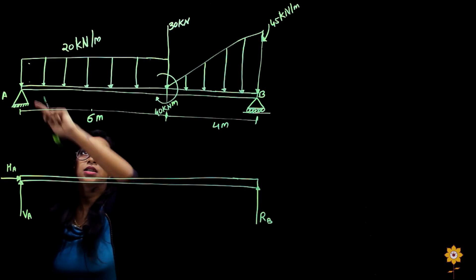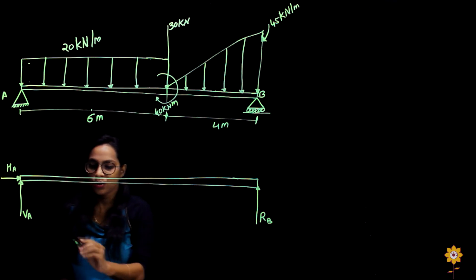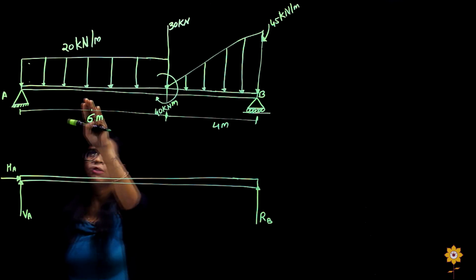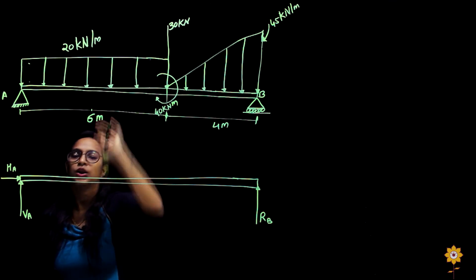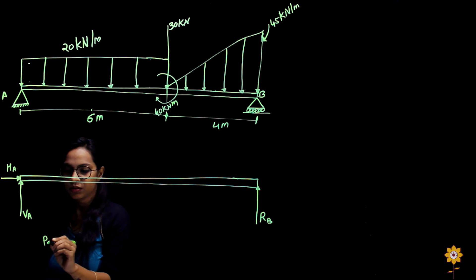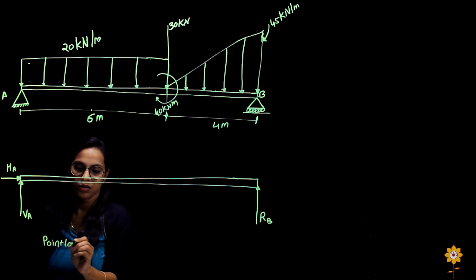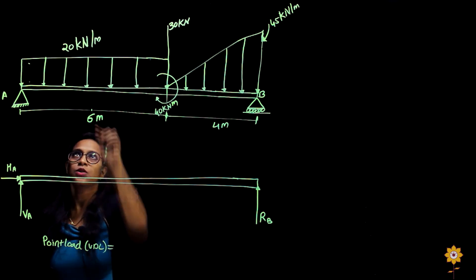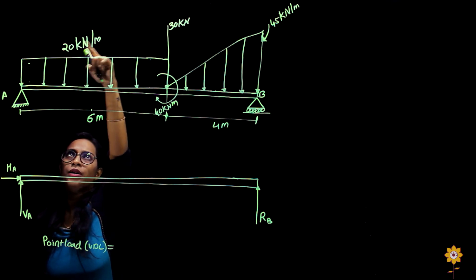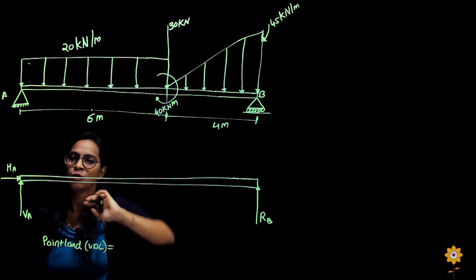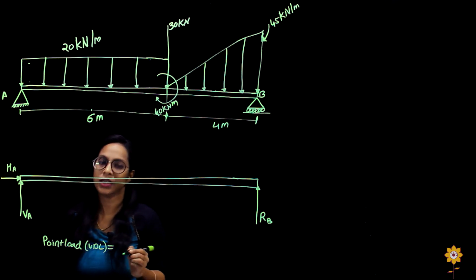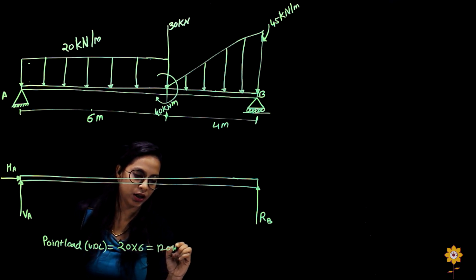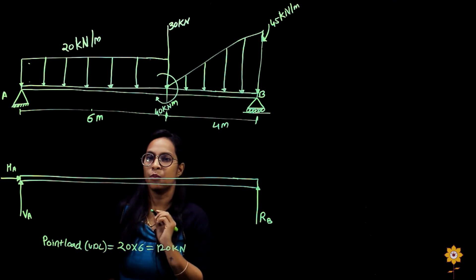This loading is a UDL loading. To convert it into a point load, we multiply the force per kilo Newton per meter by the distance. It is 20 into 6, which gives 120 kilo Newton as the point load.